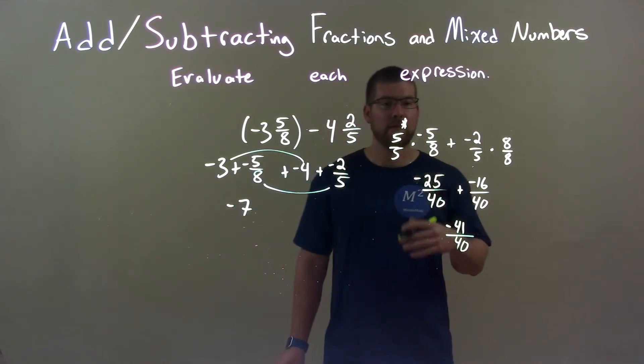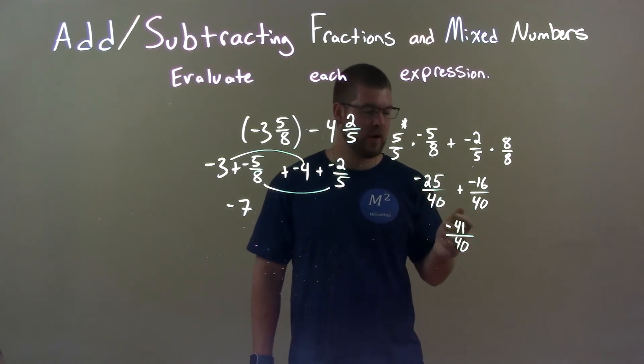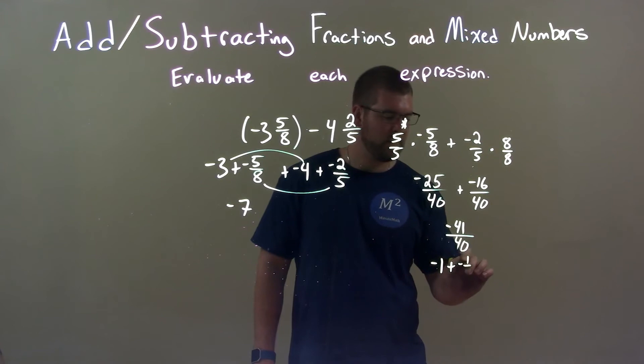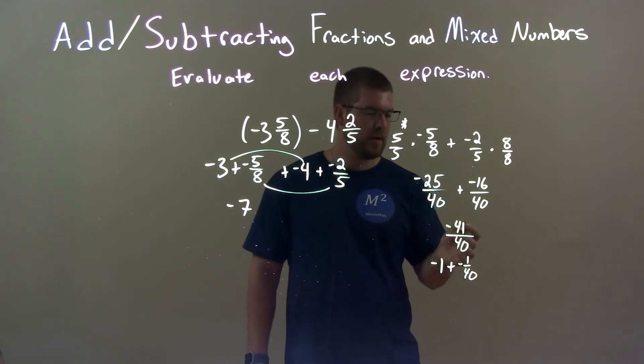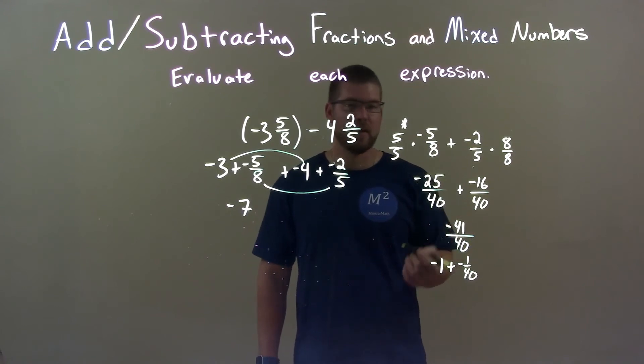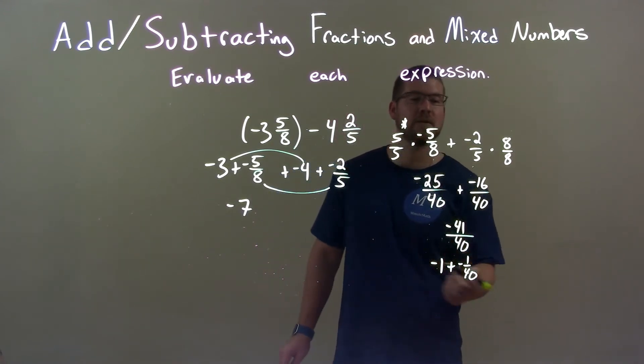And if I want to write that, break that down to be a whole number and a fraction, that would be negative 1 plus negative 1 over 40, right? Because 40 goes into 41 one time, boom, and we're left with 1 leftover, 1 over 40. And they're all negative.